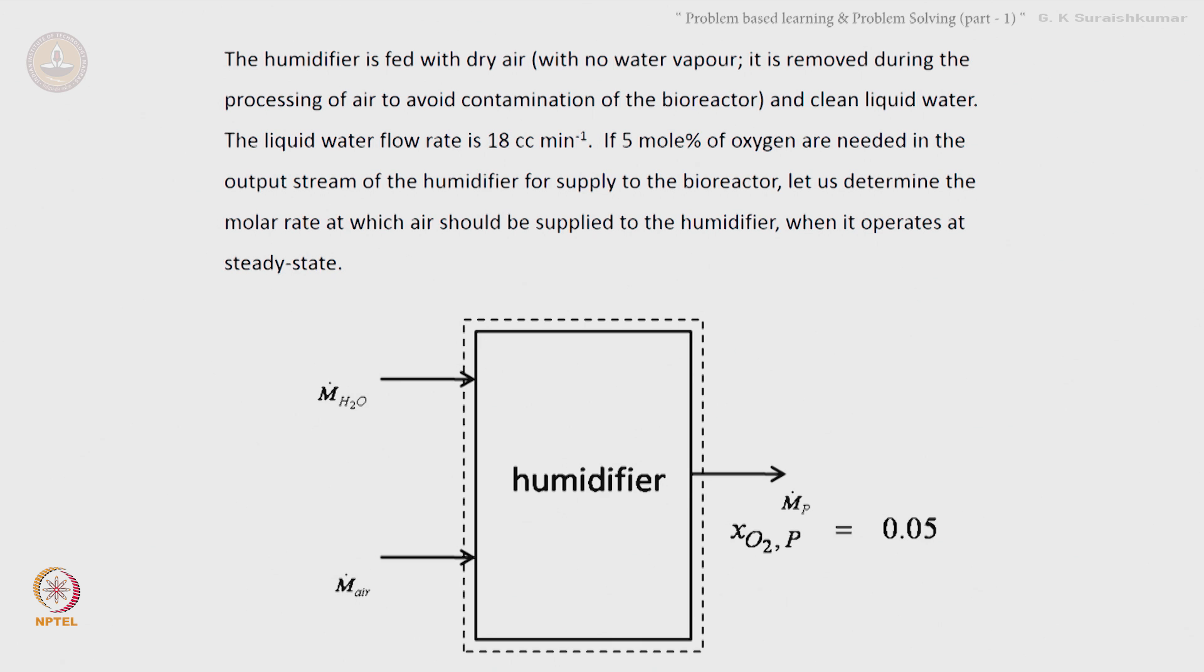The liquid water flow rate is 18 cubic centimeters per minute. If 5 mole percent of oxygen are needed in the output stream of the humidifier to supply to the bioreactor, let us determine the molar flow rate at which air should be supplied to the humidifier when it operates at steady state.